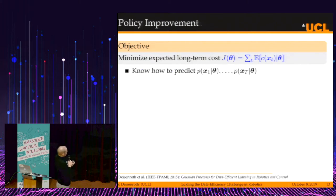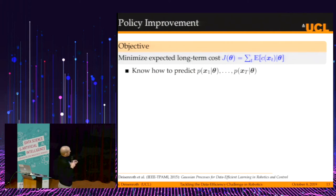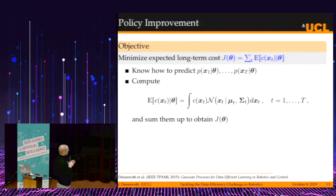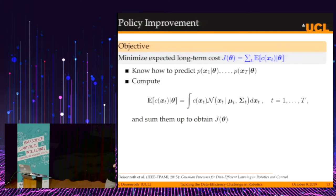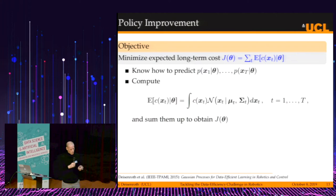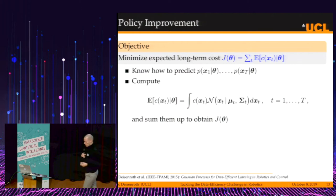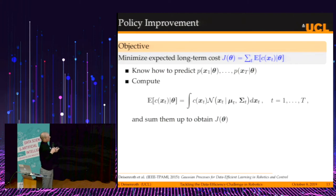To compute the long-term cost — which is the sum of expected costs at each time step — we already have these predictive distributions approximated by Gaussians. At each time step we only have to solve one integral: the cost function times the Gaussian distribution. If we choose the cost function in a convenient way, we can solve this integral in closed form. Cost functions that allow this include polynomials, radial basis function networks, Fourier series, and so on. Summing them up gives a number for the expected cost.